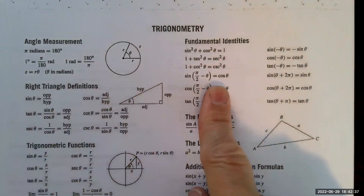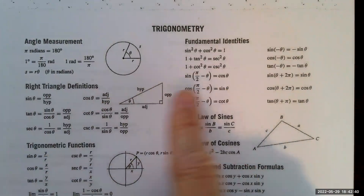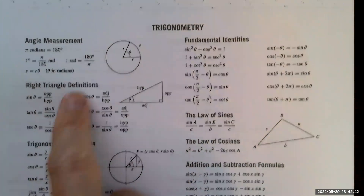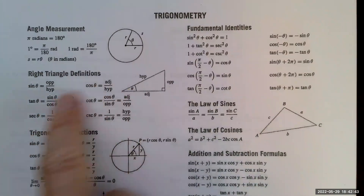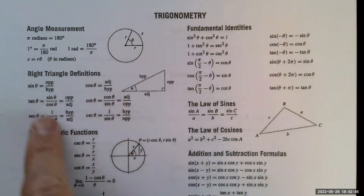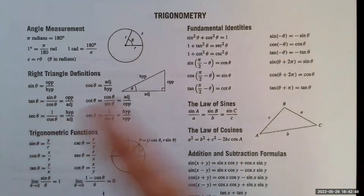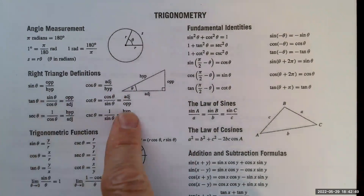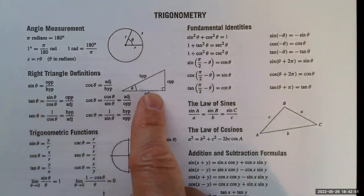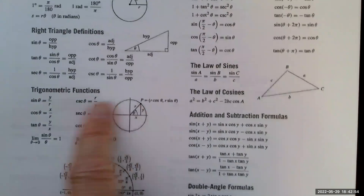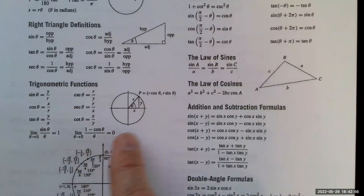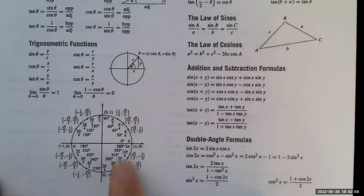It has a review of angle measurement and your right triangle definitions — if you remember SOH-CAH-TOA, or however you remembered it — in terms of defining sine, cosine, etc. And then, of course, the functions defined as a point on the unit circle, and the unit circle itself.